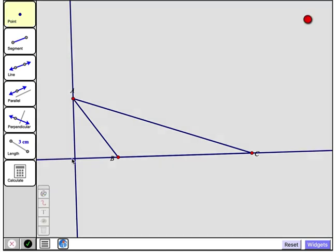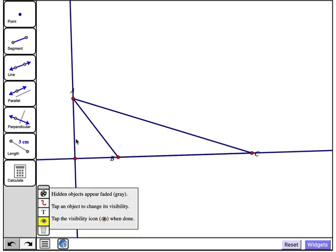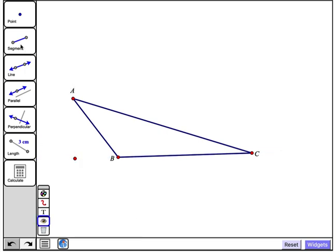So I'll tap the point tool again. I'll tap where this line through point A, perpendicular to the line through BC, meets it right there. And as before, we'll use the visibility widget to hide the line. And while we're at it, let's hide this line through BC as well.